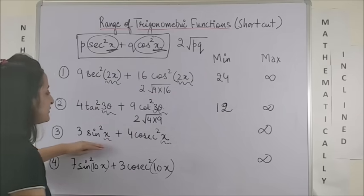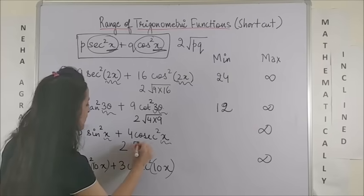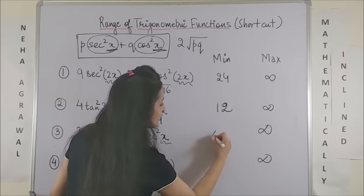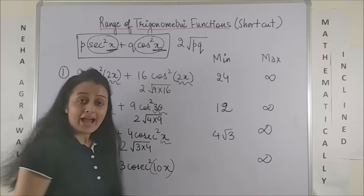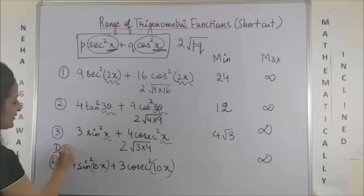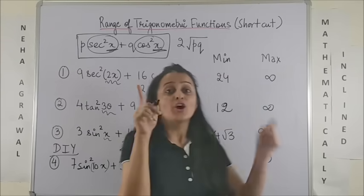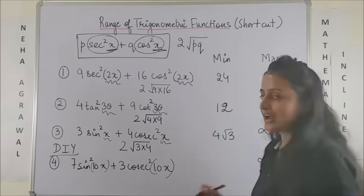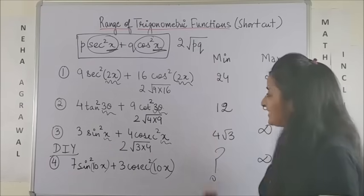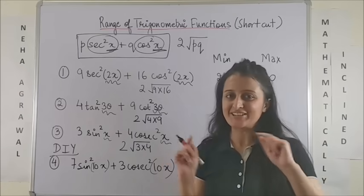Likewise, for the third one, it will be twice of under root 3 into 4, which could be written as 4 root 3. And for the last one, why not make this your do-it-yourself question? Yes, you would solve it on your own. I am sure more than half of you have already done it. And find the minimum value for this function.